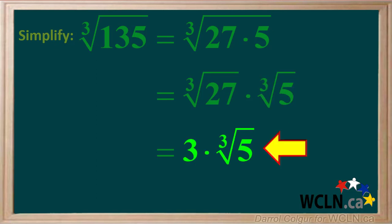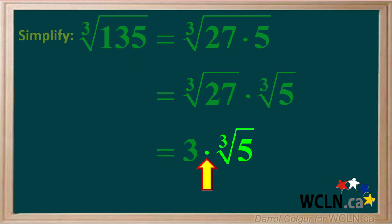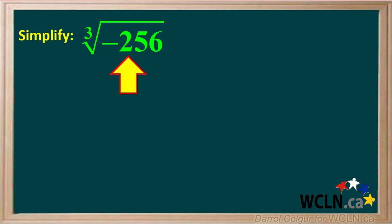5 is a prime number, so the cube root of 5 cannot be simplified — simply write it down. You're left with 3 times the cube root of 5. So the cube root of 135 can be simplified to 3 times the cube root of 5. If there's a center dot before a cube root radical, it's best not to remove it.